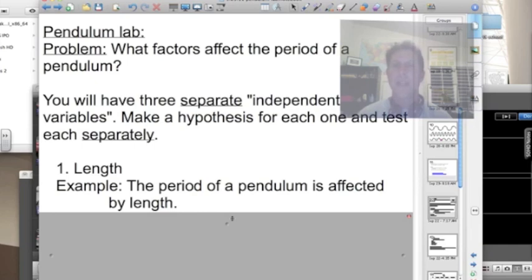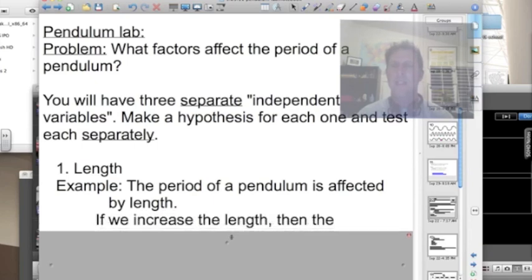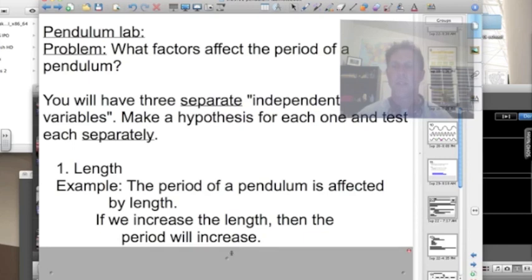Well, we can write an if-then statement to show how we're going to test it. For example, if we increase the length of the pendulum, then the period will increase as well. This may not be what you think. Make sure you write down what you think will happen, but this is just an example.